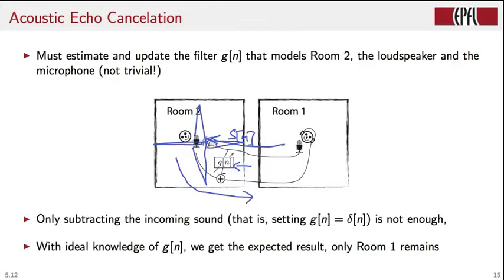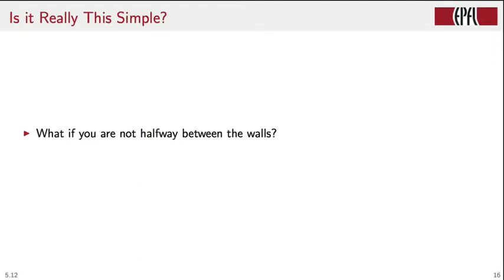We are essentially done with module 5.12. Before concluding, I'd like to ask: is it really this simple? I challenge you to work out the formulas for a very simple case — again two parallel walls, but where you're not standing exactly halfway between them, or where there is a significant distance between you and the microphone. Have fun with that, and this is the end of module 5.12.